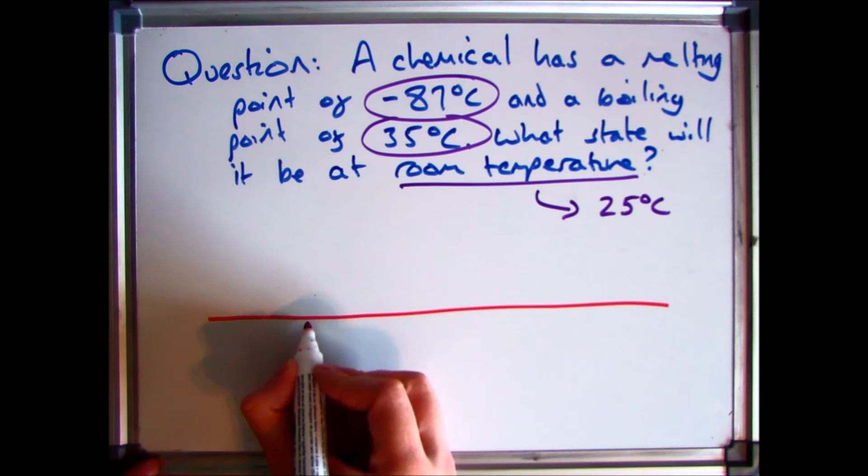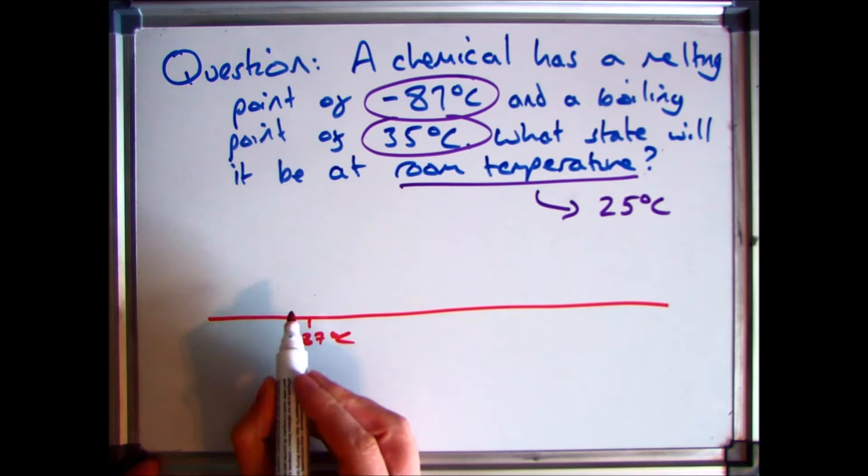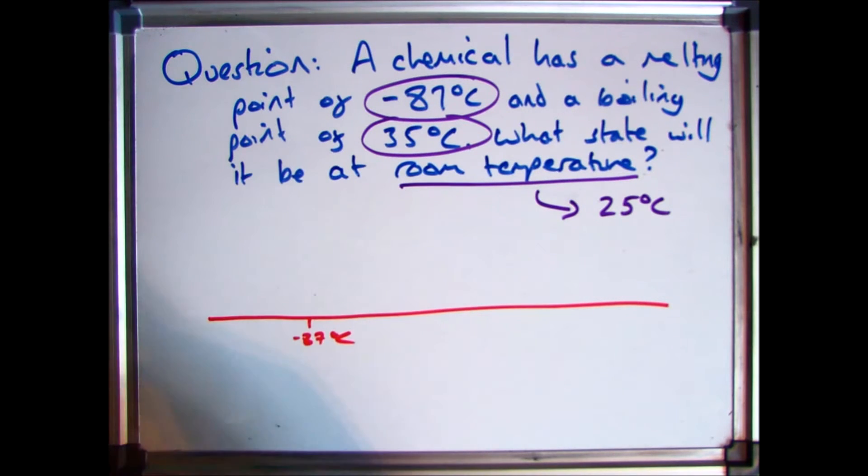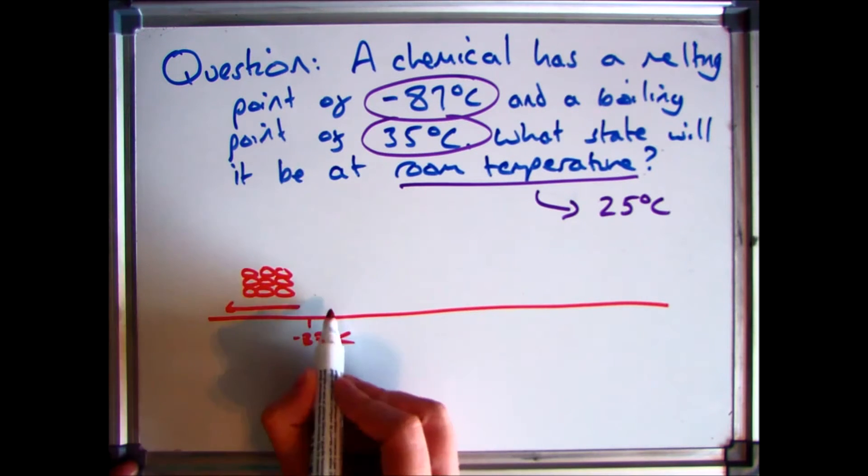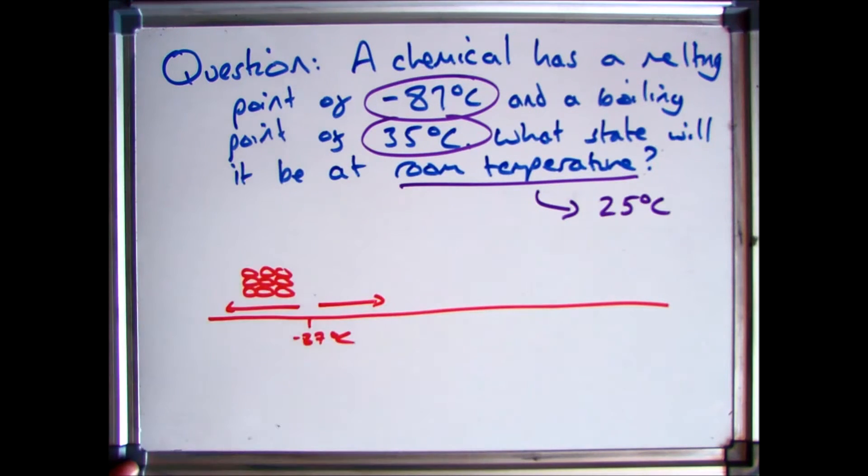So we know at minus 87 degrees C, that's where it melts, turns from a solid to a liquid. So we know that everything to the left of that line is going to be a solid. Above it, you've got your liquid and your gas.